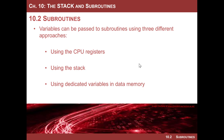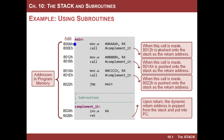The last thing on subroutines before we do our example is how do you pass information back and forth to the subroutine? There are really only three ways to store any variable in a computer: you can use a CPU register, you can use the stack, or you could use a dedicated variable in data memory. And that's really all there is in a computer anyway. Let's do an example.